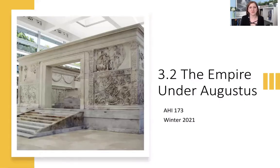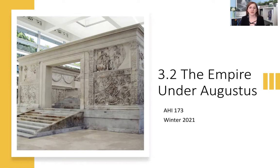Hello and welcome to the second lecture of week three. Last time we looked at Augustus part one; this is Augustus part two. We'll be looking at the last couple of monuments of his rule in Rome, and then we're also going to be looking at the rest of the empire — what was going on in other parts of the Mediterranean, of the Roman world, while he was emperor.